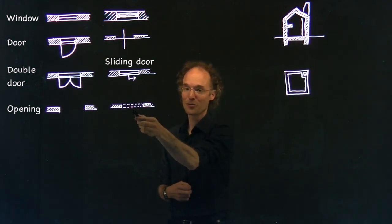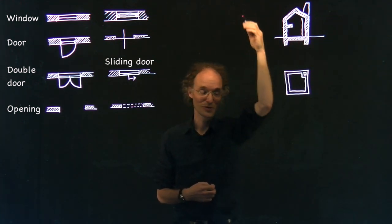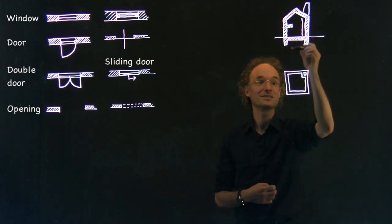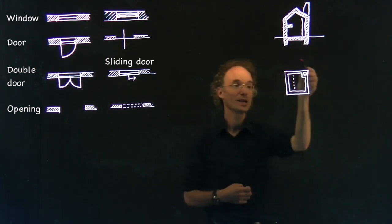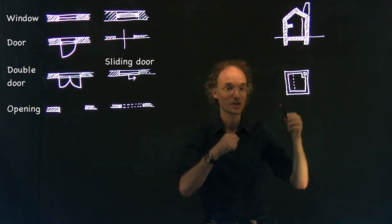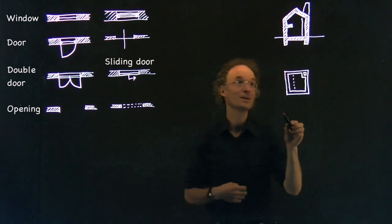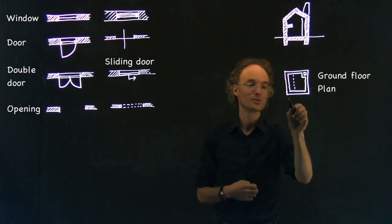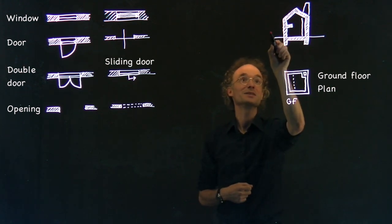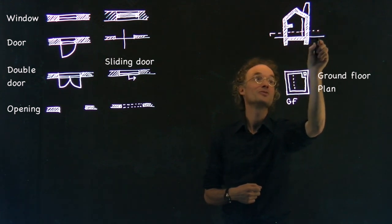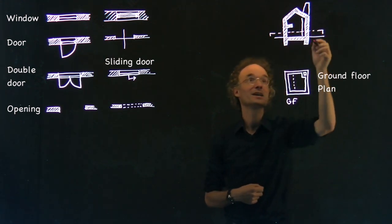You know from this drawing that something which is above your head you indicate as a dashed line. So I take this position and draw the dashed line. So now I know in this plan that there's something above my head. This is the ground floor drawing. And you also remember this is actually a section which is taken one meter above ground, so on this level looking down.